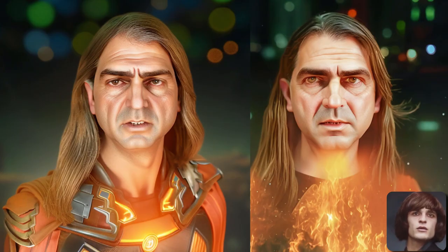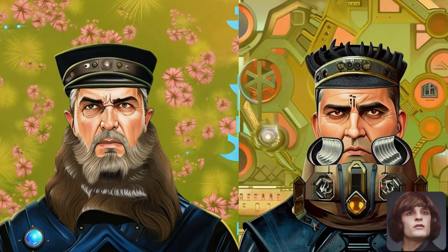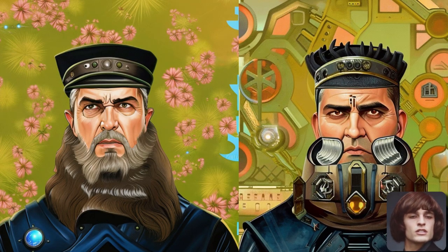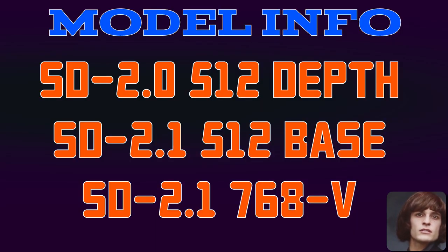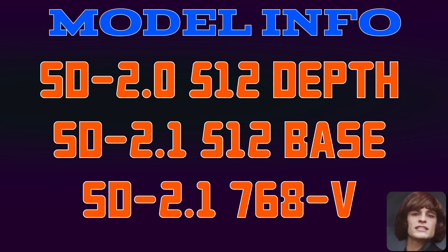In a previous video, we already saw the quality of Dreambooth with SD2 versus SD1.4 and 1.5. So in this video, I'm going to be looking at three of the Stable Diffusion 2 models: the 512 depth model, the 512 base model, and the 768V model.